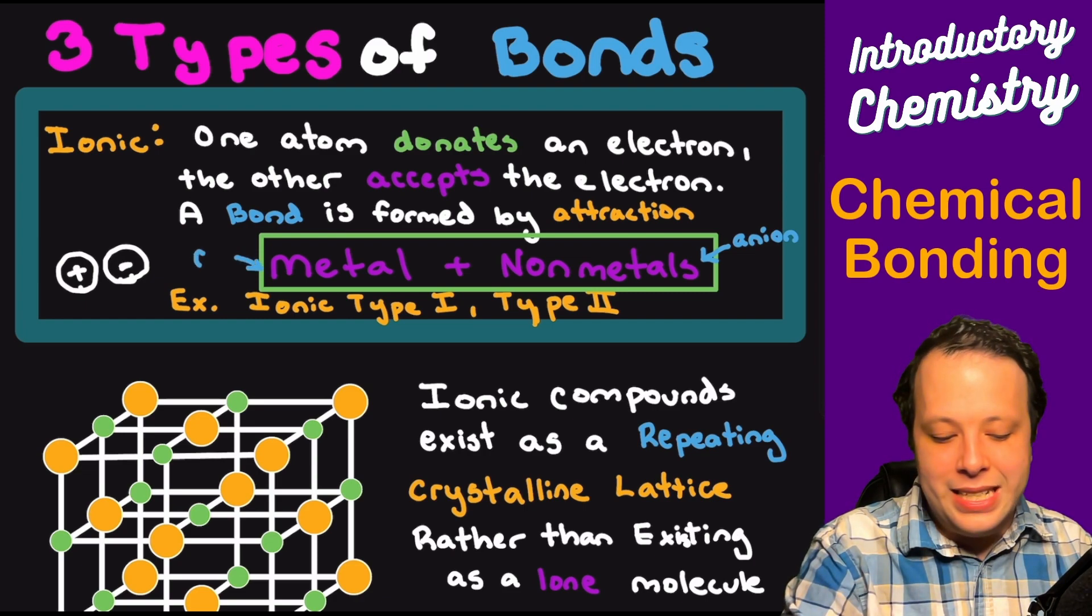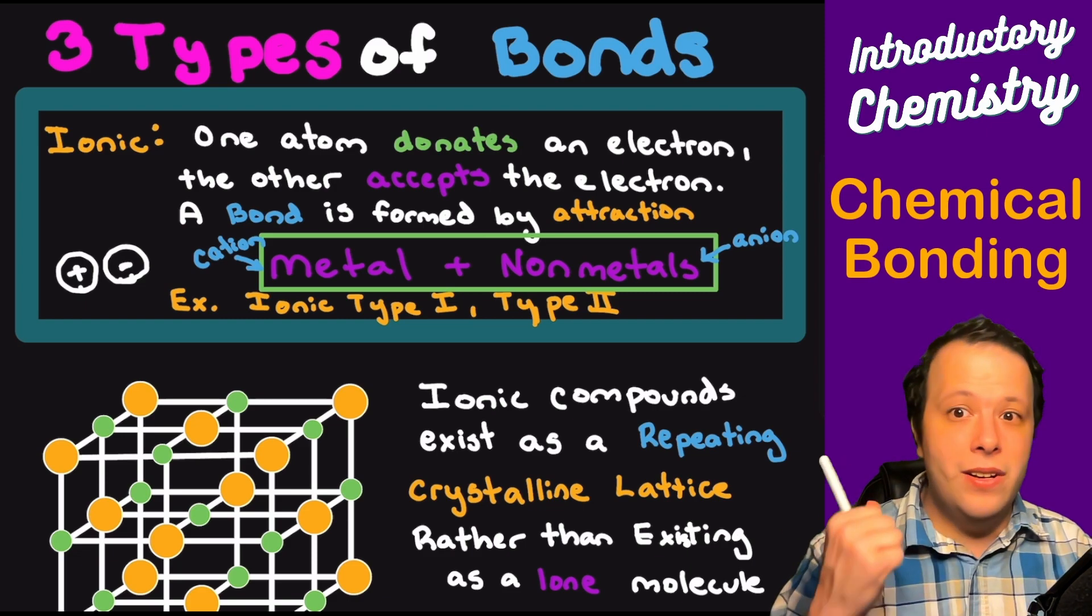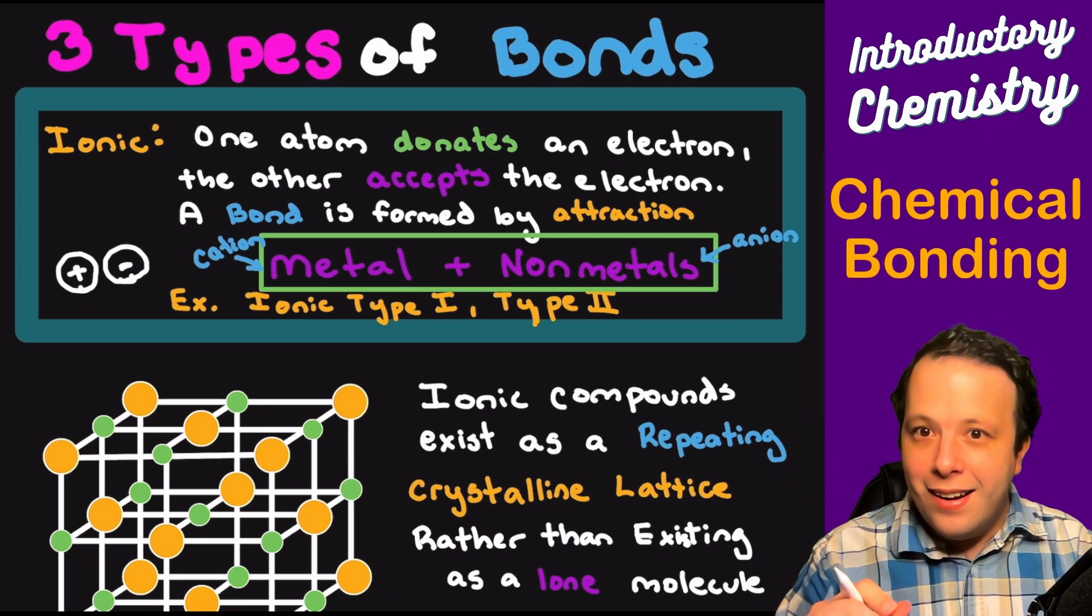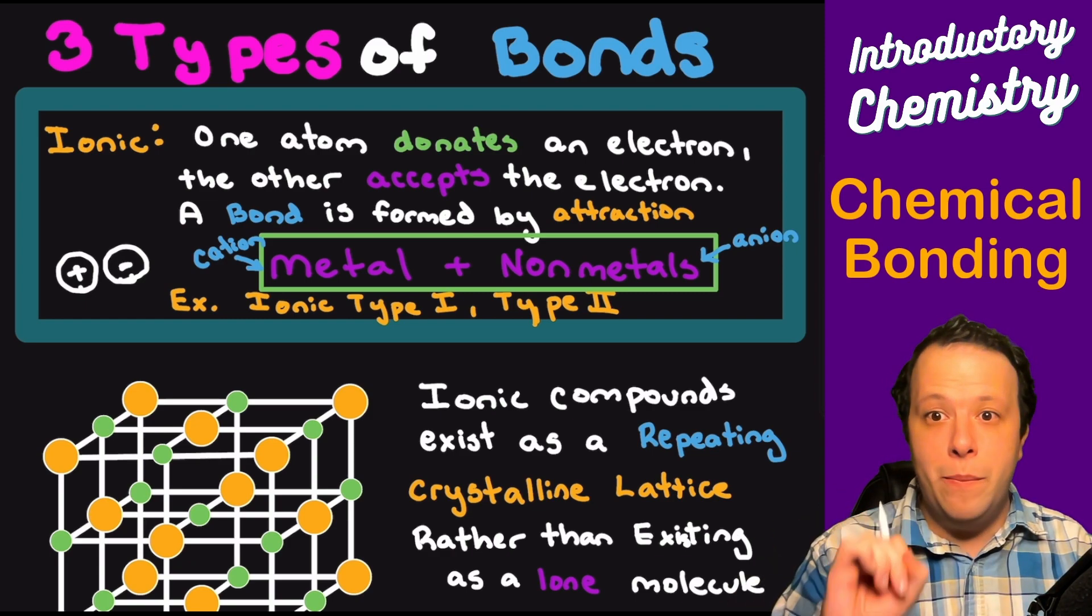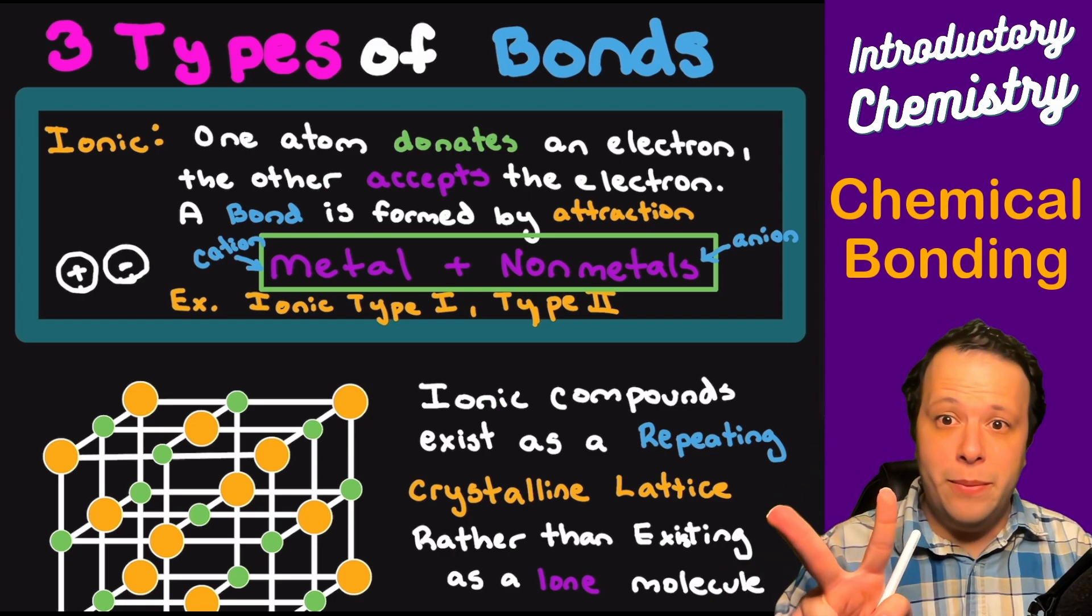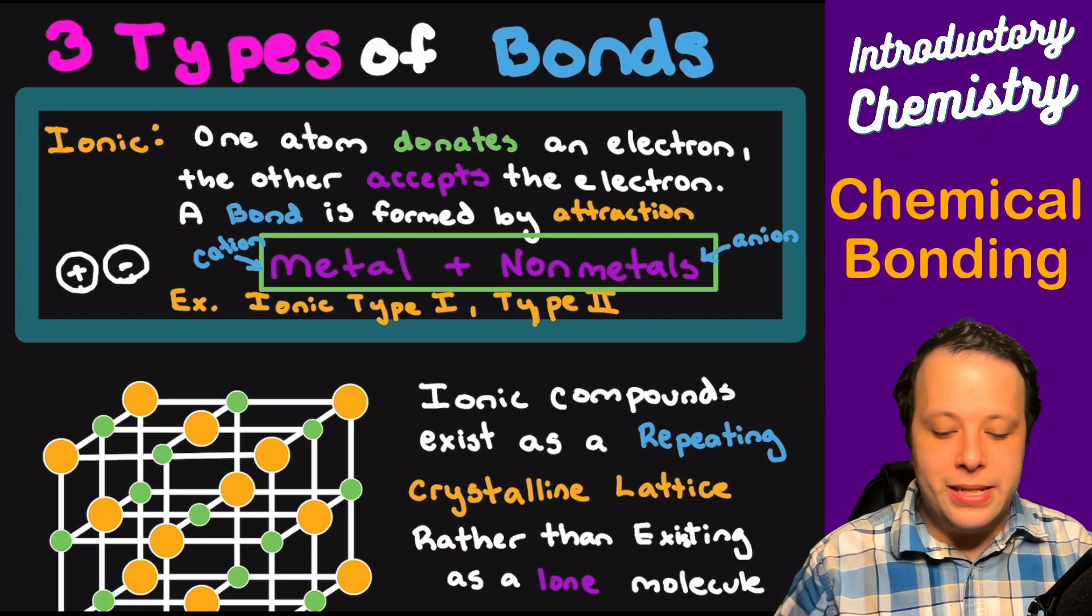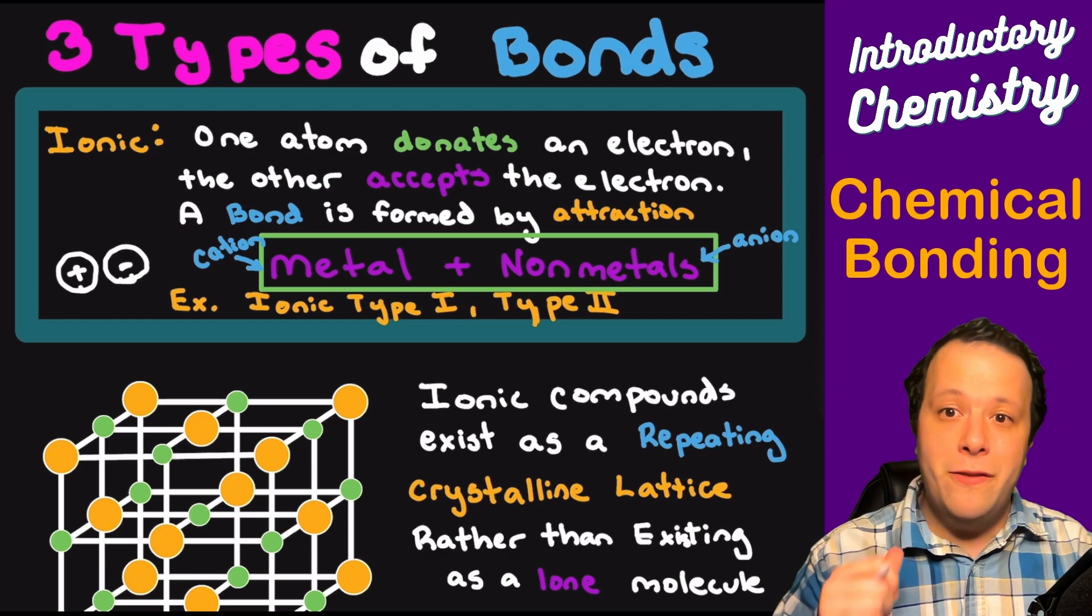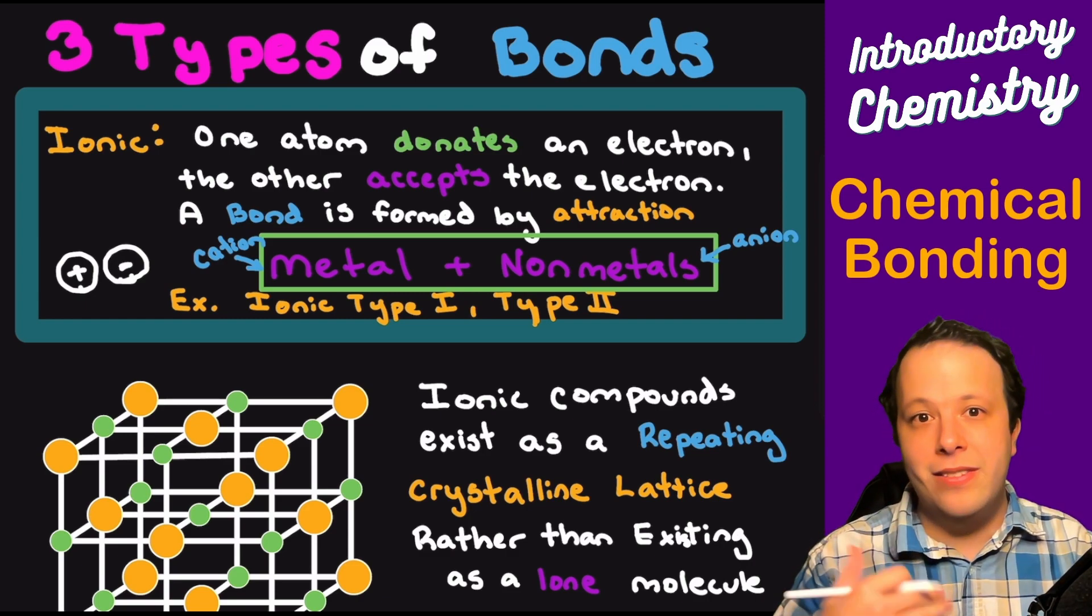Now these can exist in different subcategories. They can be type one or type two. Type one means that the cation is predictable. It's something that always has the same charge no matter what. It's usually one of the elements found in your first two columns of your periodic table or maybe ammonium as a polyatomic. Type two is when you have a variable charge, meaning that there is a transition metal that's bonding.